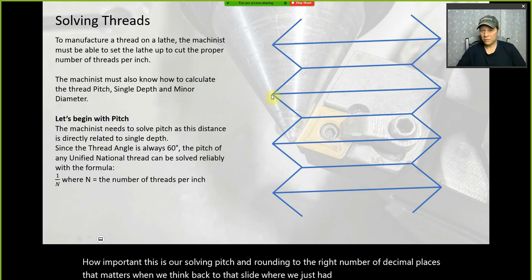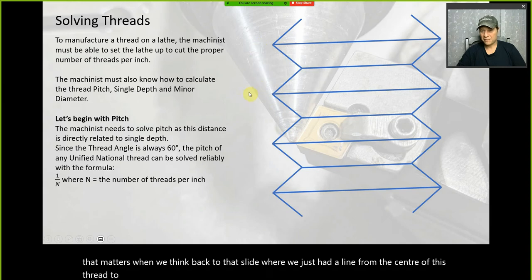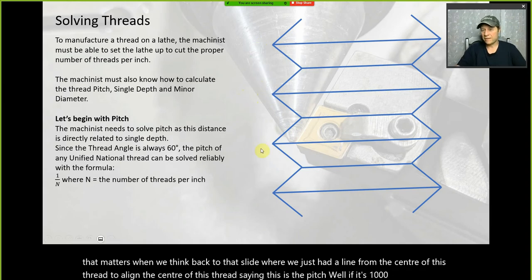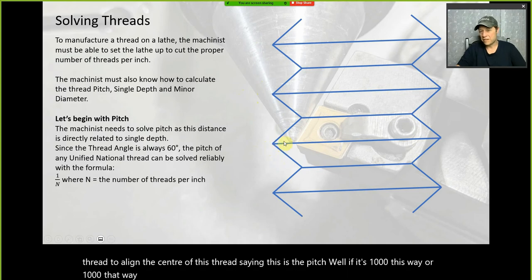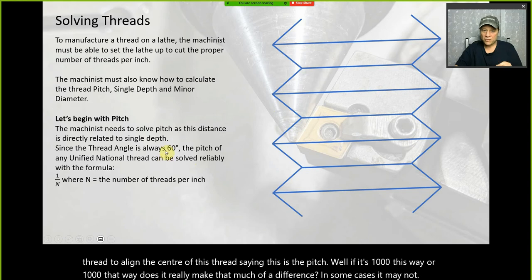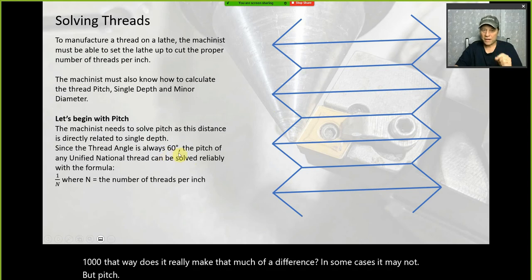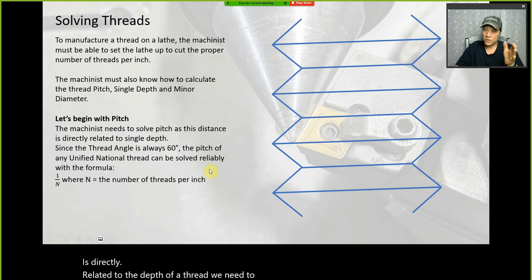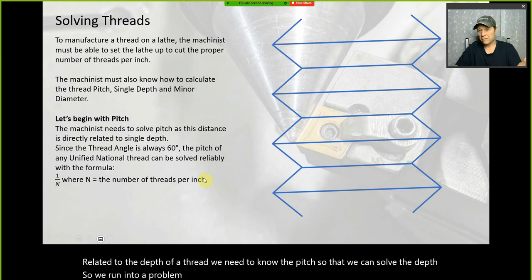If the pitch is off by a thou here or there, it may not matter in some cases, but pitch is directly related to the depth of the thread. We need to know the pitch to solve the depth. If we take liberties with plus or minus two thou here and there, we accumulate error and the thread won't go together.